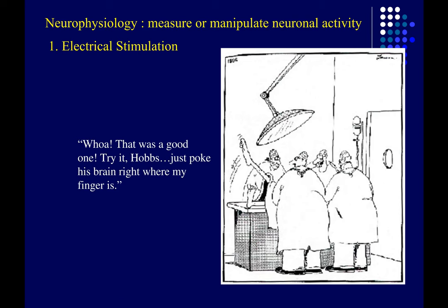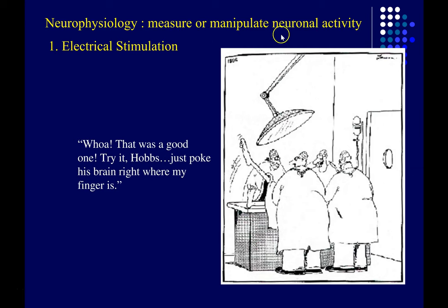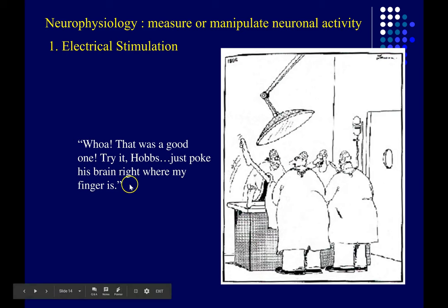Most of the research we're going to talk about this semester will fall into the category of neurophysiology — a broad term describing any method that measures or manipulates brain activity. One way to do this is with electrical stimulation. If you had a patient with their skull open and stimulated the brain electrically, you can actually cause parts of the body to move involuntarily.